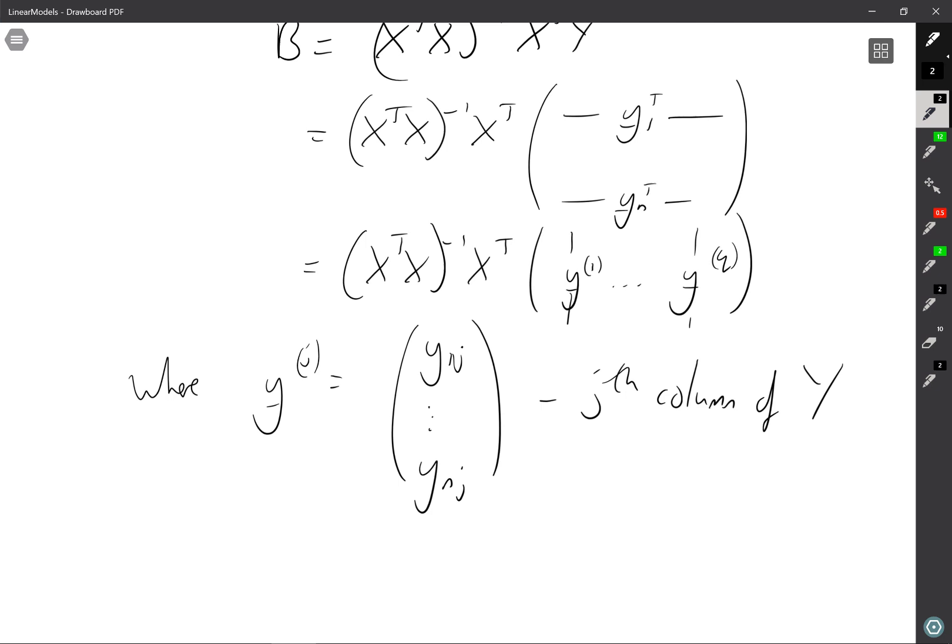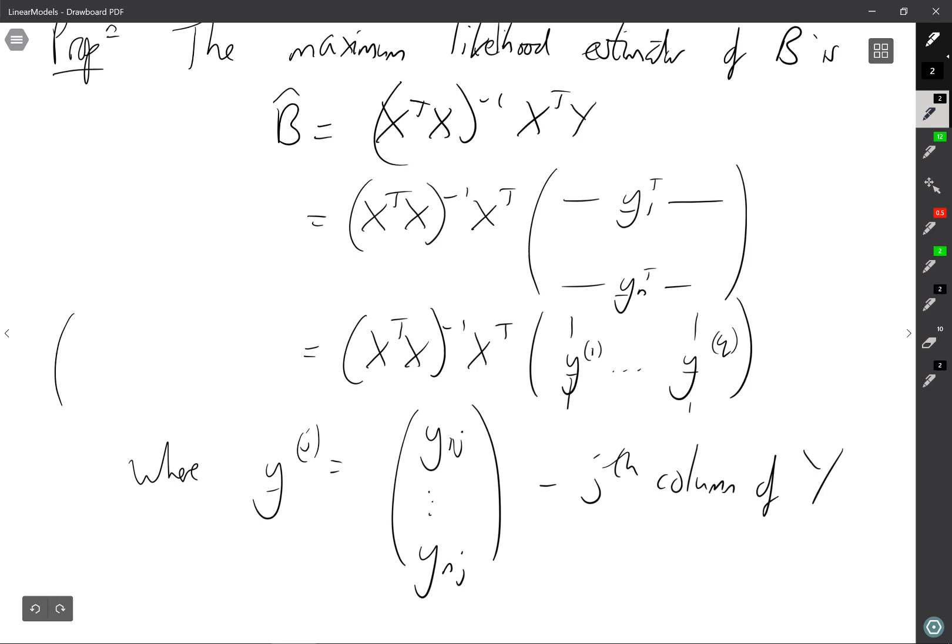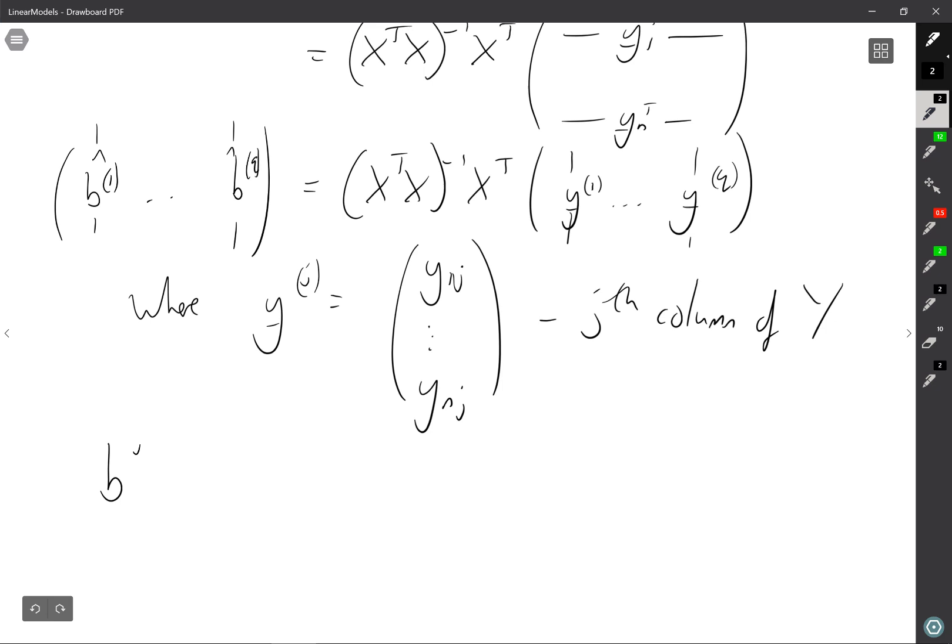So if you look at this, this is very similar to what we had before. So if we think about B hat here, if we draw them in, we had q columns. What we can see from this formula is that the jth column of the estimated covariance matrix is just (X^T X)^{-1} X^T yj. So this is the OLS estimator, the ordinary least squares estimator for regressing yj onto X, projecting yj onto columns of X.